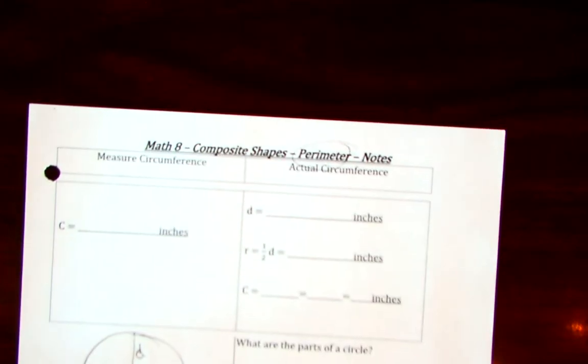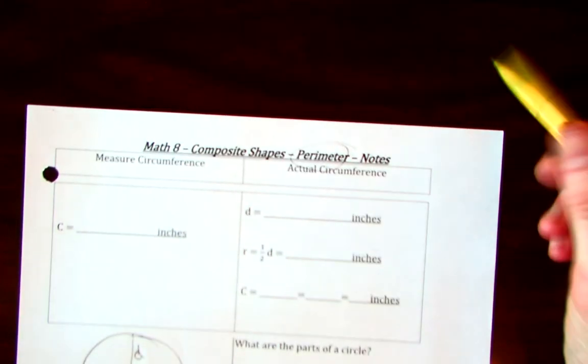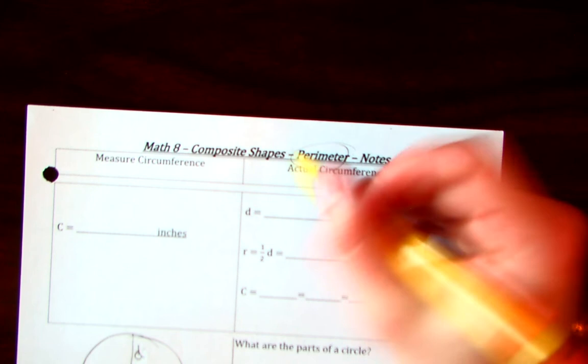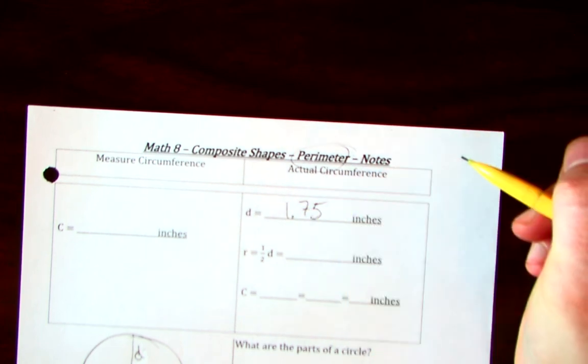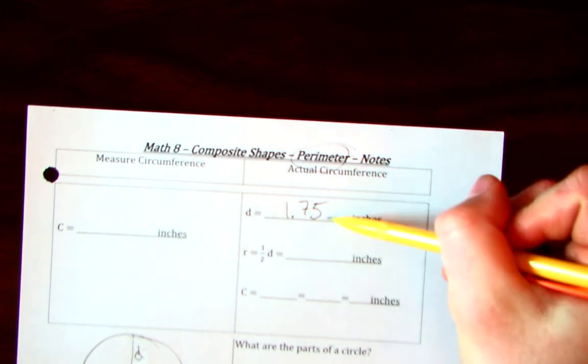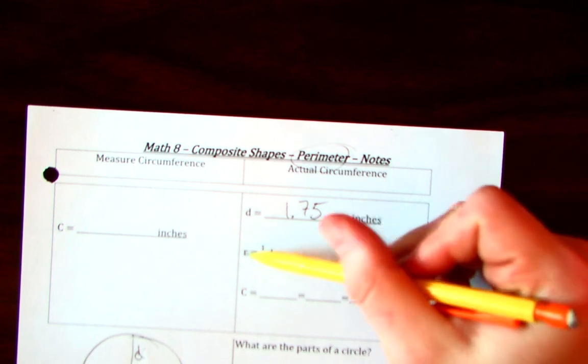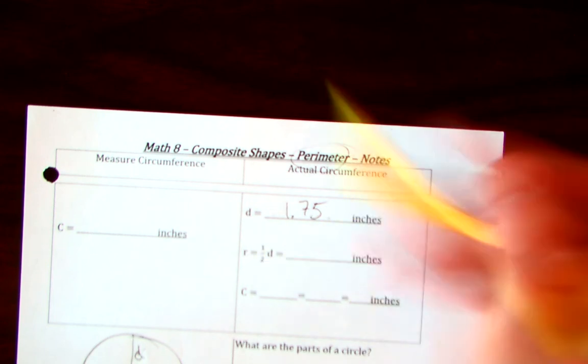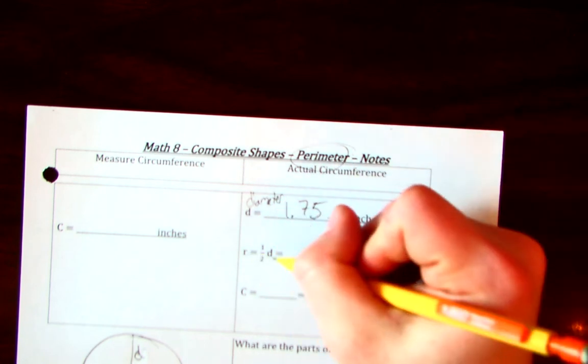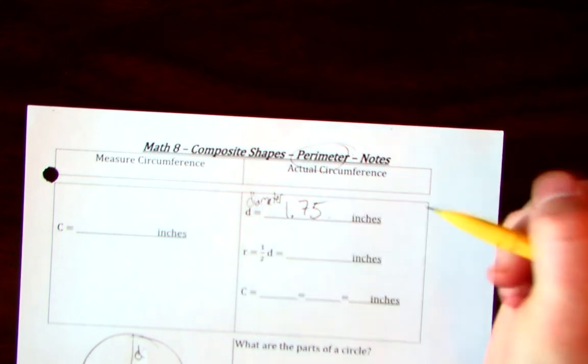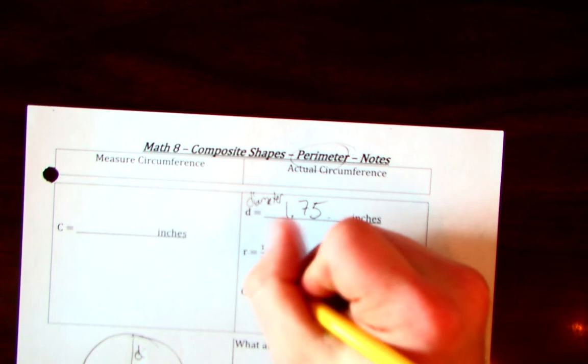Let's see. We have that the diameter for this is about 1.75 inches. And so, from this, you are able to calculate the radius. This is diameter, and you can get the radius from half of the diameter.